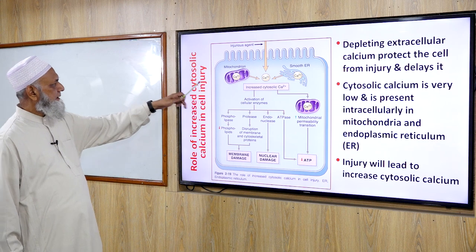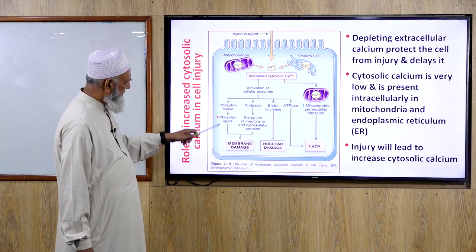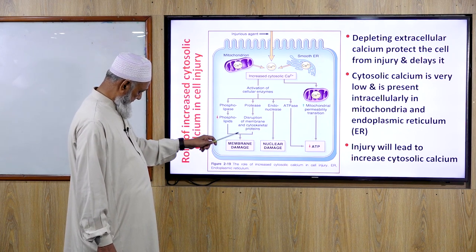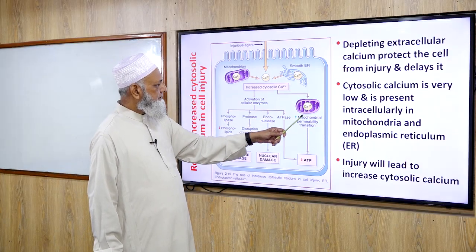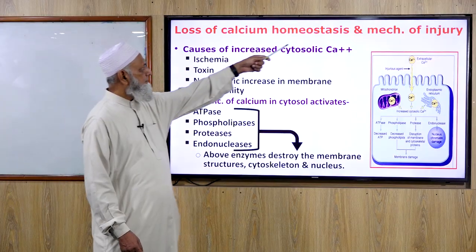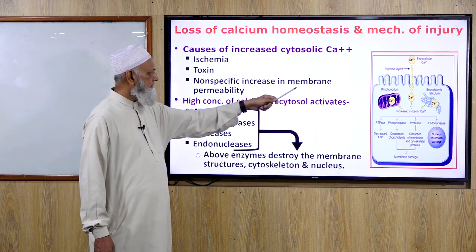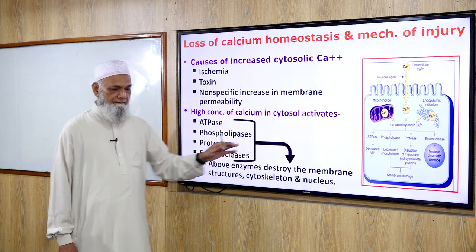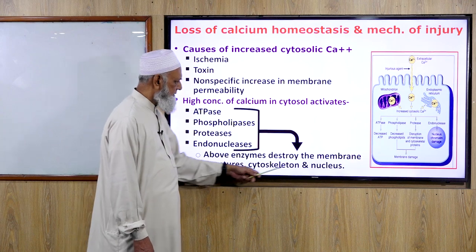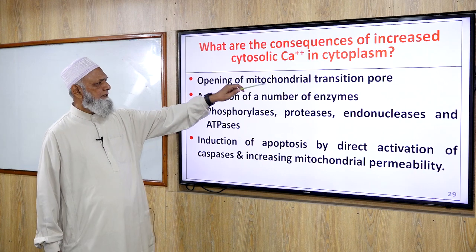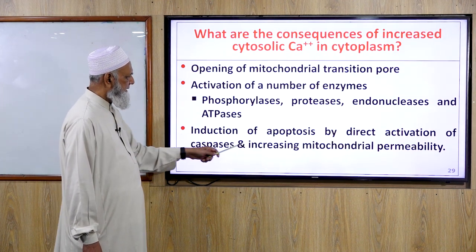Role of increased cytosolic calcium: increased cytosolic calcium activates cellular enzymes — phospholipase, protease, endonuclease, ATPase — causing decreased phospholipids, disruption of membrane and cytoskeletal proteins, and membrane damage. Endonuclease causes nuclear damage; ATPase causes decreased ATP. Causes of increased cytosolic calcium include ischemia, toxins, and non-specific increase in membrane permeability. High cytosolic calcium activates ATPase, phospholipases, proteases, and endonucleases, causing destruction of membranes, cytoskeleton, and nucleus. Consequences include opening of the mitochondrial transition pore, activation of enzymes, and induction of apoptosis by direct activation of caspases and increasing mitochondrial permeability.